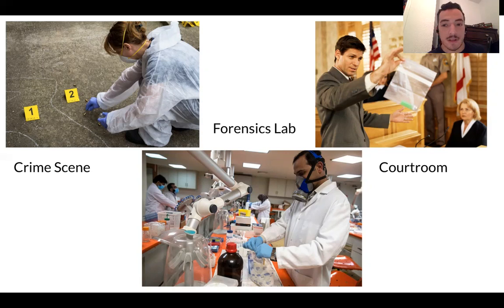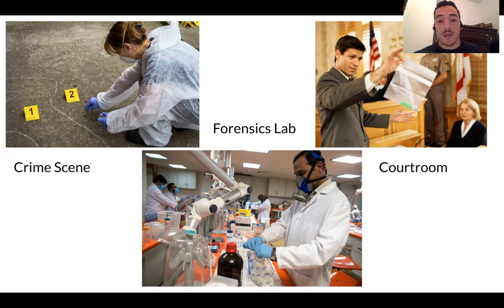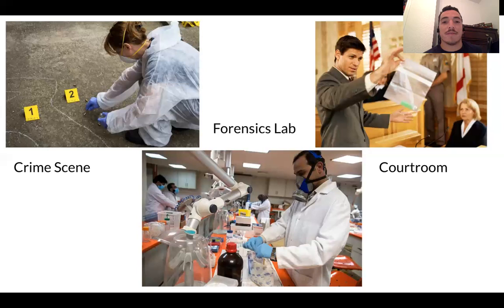You may have heard of fingerprints — we'll be talking specifically about those. The third setting is the courtroom. A lot of this science is used in the courtroom to try to prosecute people, and it raises the question: is it doing so justly and fairly? We'll be talking about that too. Forensic science ties into science, politics, and history, and we're going to weave all these things together.